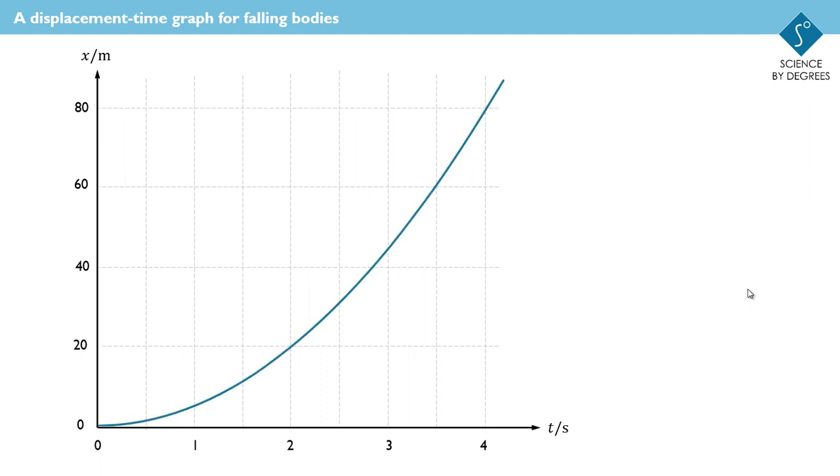Here's a graph showing the displacement of a falling object, and you can see that it's definitely not a straight line. The gradient of it increases as the elapsed time increases, but that makes sense because the thing is accelerating, and the gradient represents the velocity.